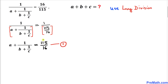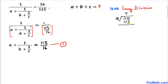Now let's focus on the fraction on the right hand side: 115 divided by 16. I have written it down as a long division. Let's perform the division: 16 times 7 is 112. We subtract and 3 is our remainder. So 7 is our quotient, which is our value for a, and 3 is our remainder. Thus our a value turns out to be 7.